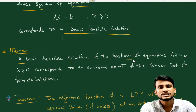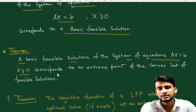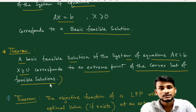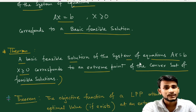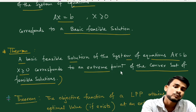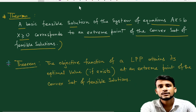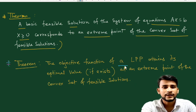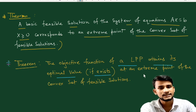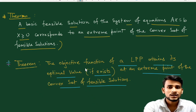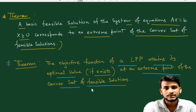Theorem 2: A basic feasible solution of the system of equations Ax = b, x ≥ 0, corresponds to an extreme point of the convex set of feasible solutions. Theorem 3: The objective function of an LPP attains its optimal value, if it exists, at an extreme point of the convex set of feasible solutions.